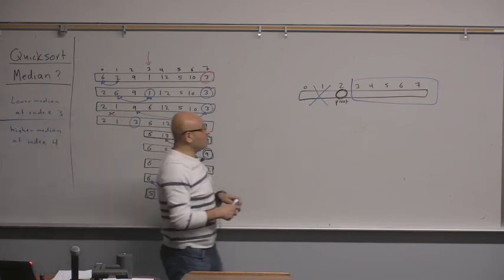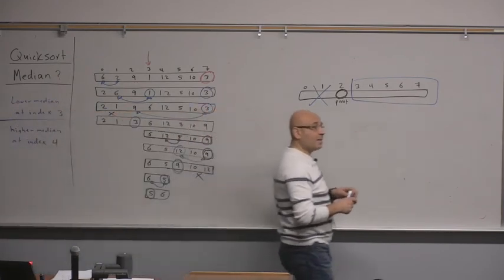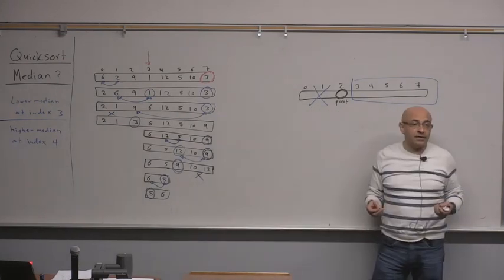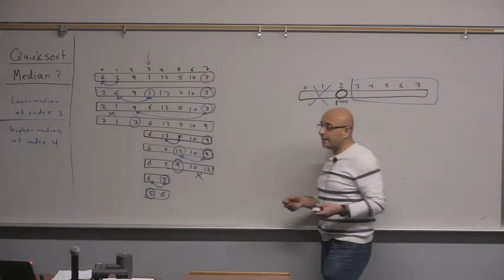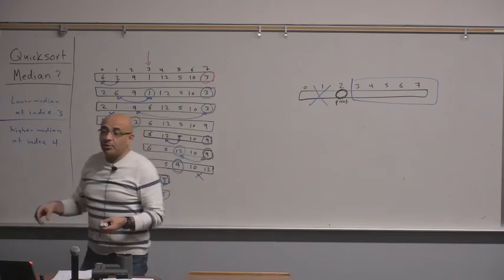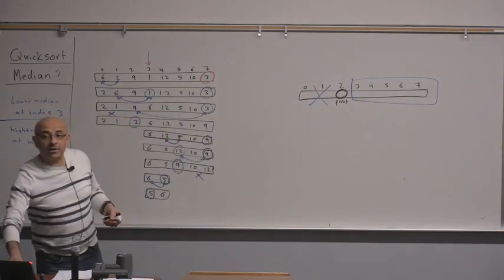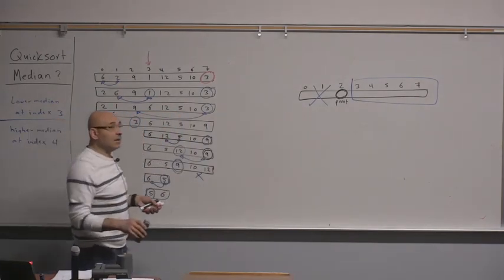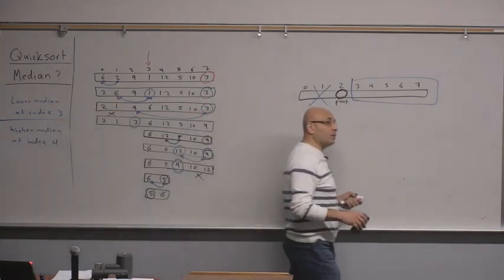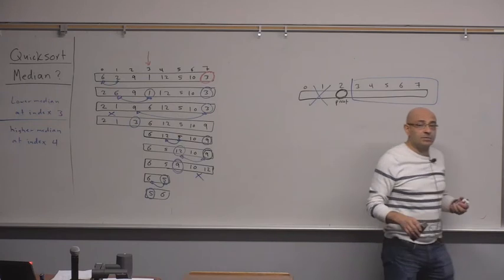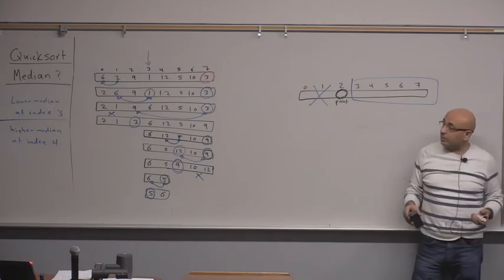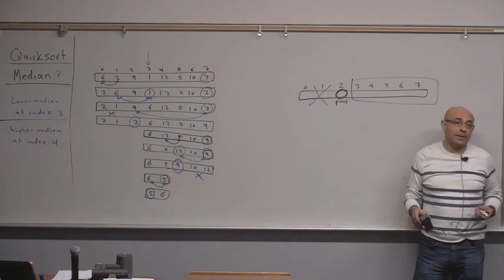When the pivot is at position 3, we know the pivot is always in the right place. So this means the median — the lower median, or the element at index 3 — is 5. This is the algorithm for finding the median. The big question now is: what's the running time for this algorithm, and how does it compare to quicksort? Do you expect it to be faster or slower, and why?